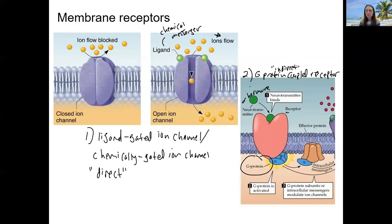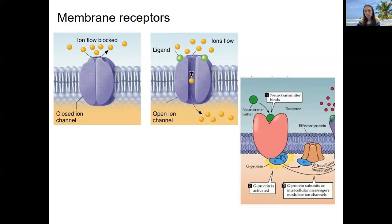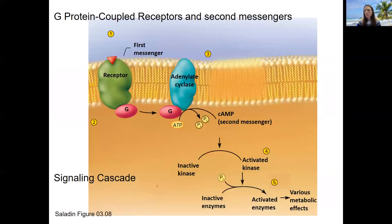Here is the G-protein. This is a way of signal transduction — taking the signal from outside of the cell and bringing it into the cell. I do have a more detailed picture of this, and we'll see it more especially when we get to the autonomic nervous system.